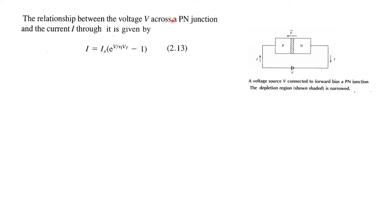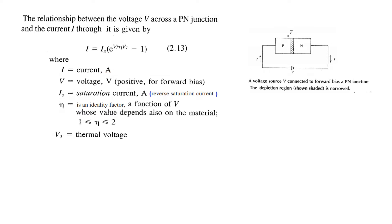The voltage across a P-N junction and the current through it is given by this formula. I is the current flowing through it. V is the voltage — positive for forward bias, so this is the voltage we applied. IS is called the saturation current, also called reverse saturation current, and this is primarily due to the minority carriers.